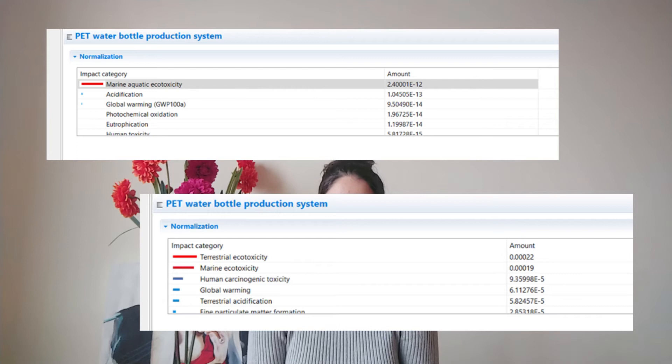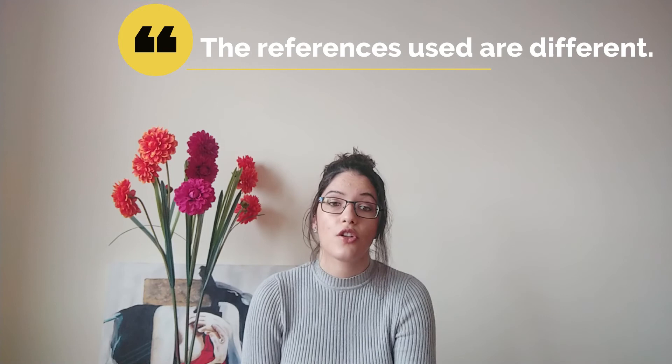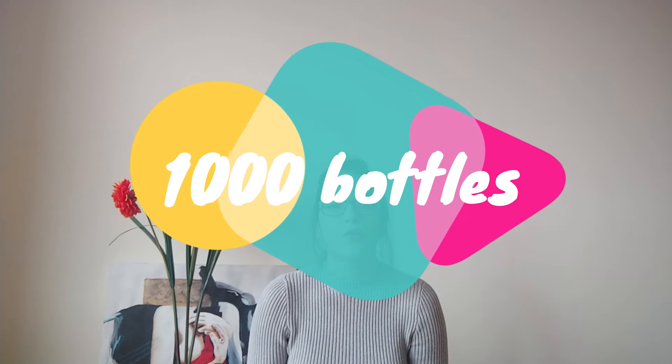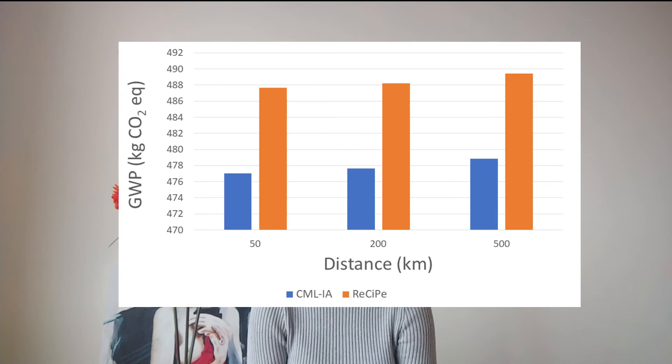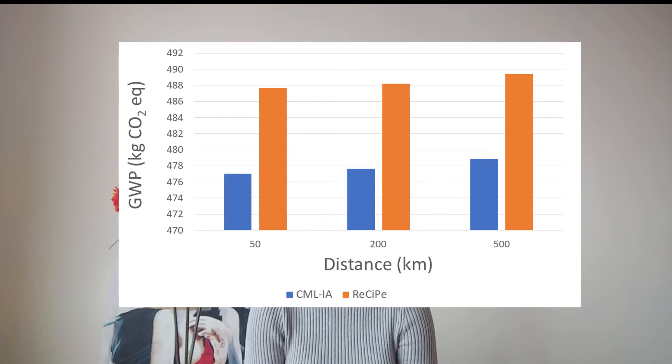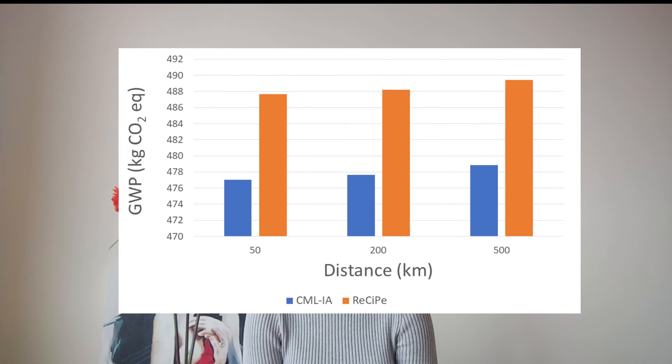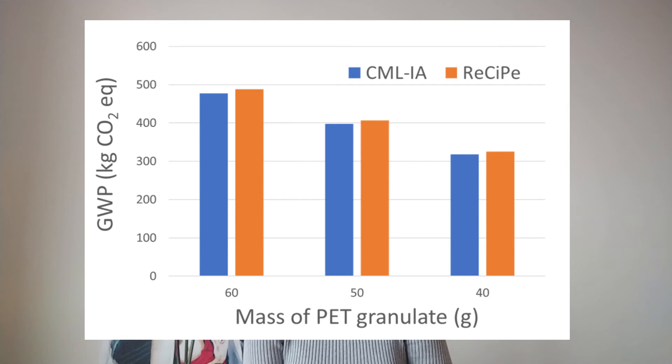Doing this study for 1000 bottles, I varied the distance and mass of PET granulate factors and selected all LCIA categories available. Comparing the distance, I selected 50, 200, and 500 kilometer values. Between methods, the behavior observed for each distance is similar; however, the values are higher compared to the CML method, which improves between 0.6 and 3.3%. With variation of mass of PET granulate, the behavior between methods is identical; however, the greater the weight associated with granulate, the higher the environmental impact.